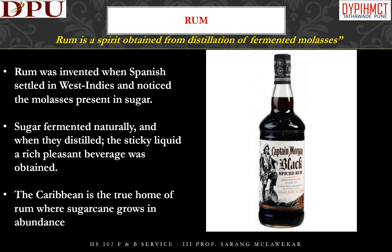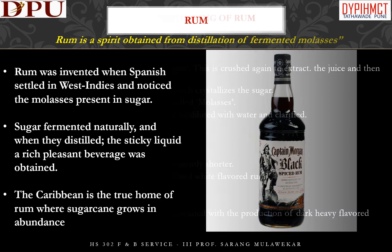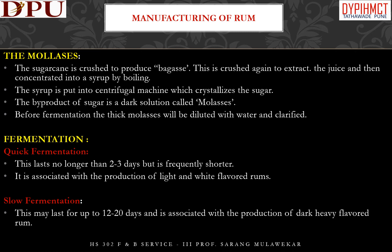The next dark spirit is rum. Rum was invented when the Spanish settled in the West Indies and noticed the molasses present in sugar. Sugar fermented naturally, and when they distilled the sticky liquid, a rich pleasant beverage was obtained. The Caribbean is the true home of rum, where sugarcane grows in abundance. To obtain the molasses, sugarcane is crushed to produce bagasse, crushed again to extract juice, then concentrated into a syrup by boiling. The syrup is put into a centrifugal machine which crystallizes the sugar, and the byproduct is a dark solution called molasses.